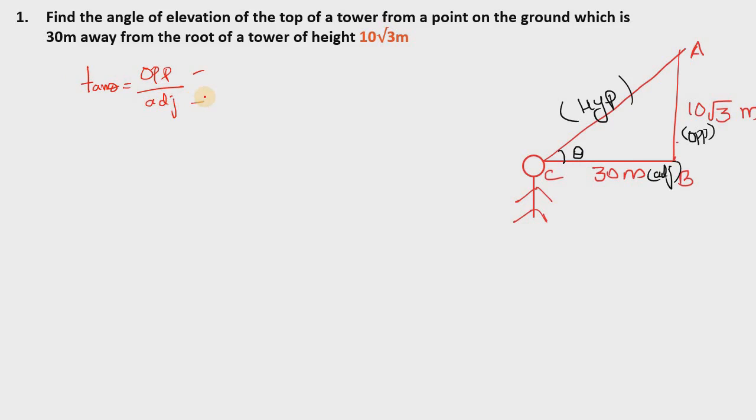We know tan theta equals opposite by adjacent. Adjacent is equal to 30 meters. The meters cancel. Tan theta is equal to 10 root 3 over 30, which simplifies to root 3 by 3.